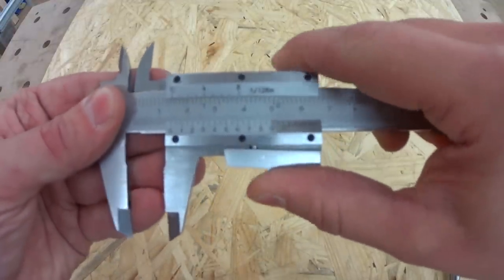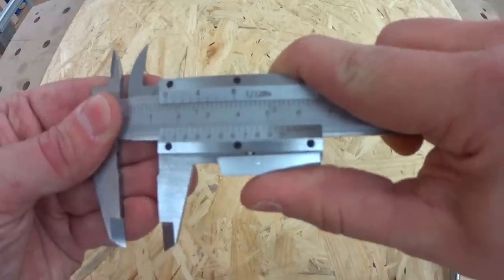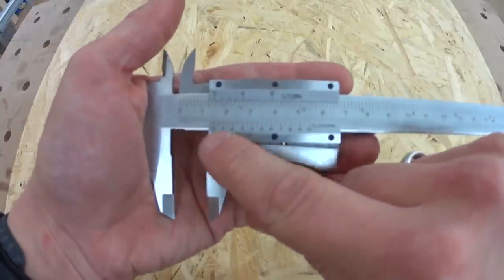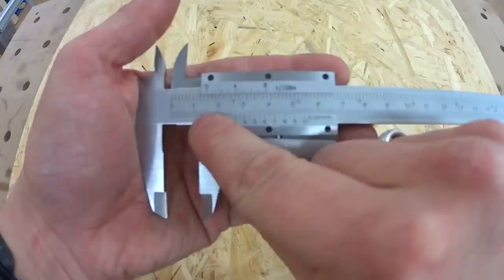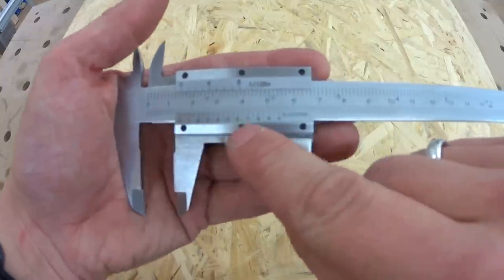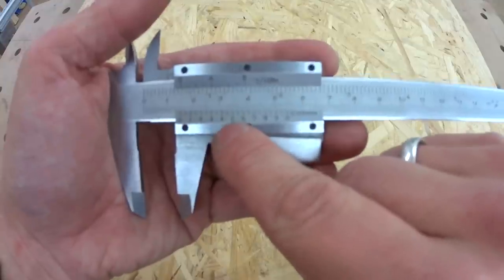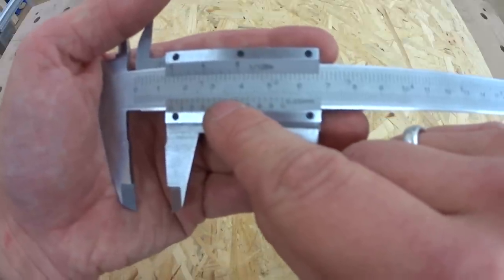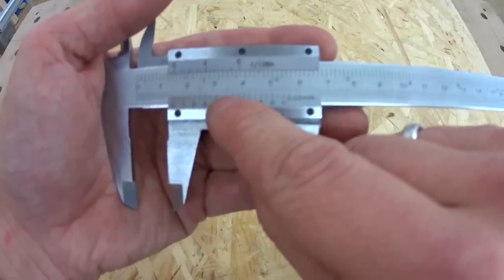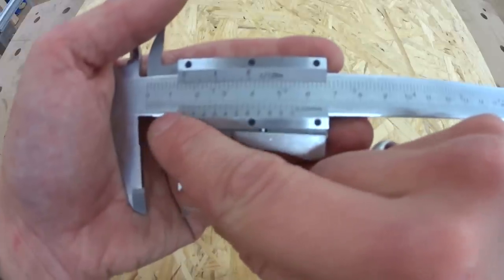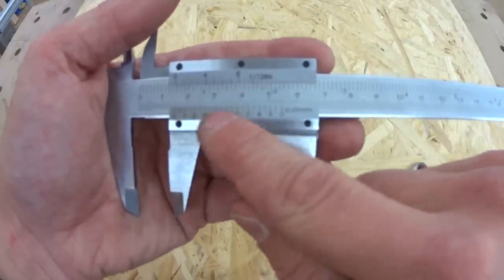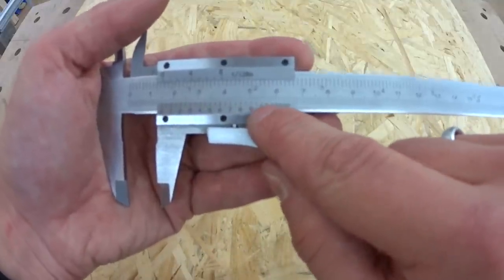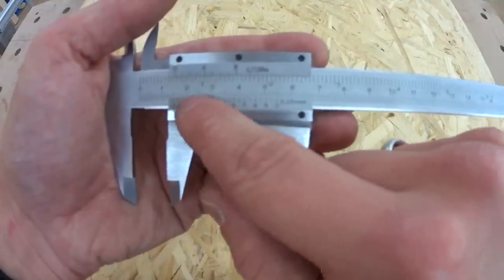If you want to measure a decimal point, for example, if I set it to here. This is 15.5 millimeters. You have your 0 on the 15 and a little bit more. And the line of the 0.5 millimeter lines up with another millimeter point. You add this to your main measurement and you get your 15.5 millimeters.